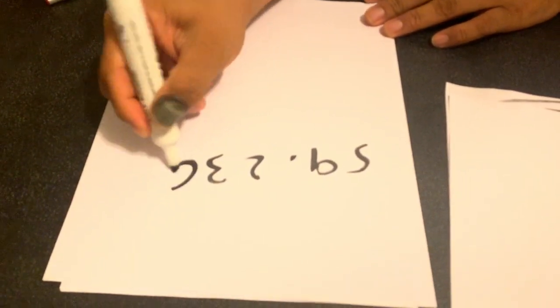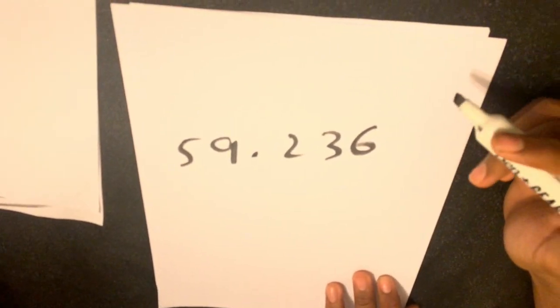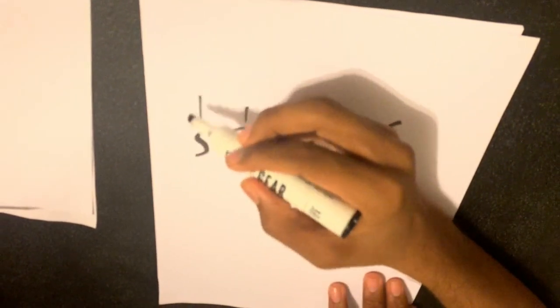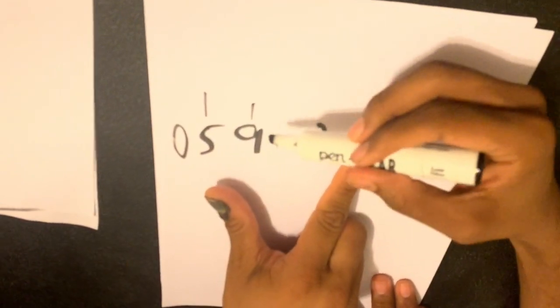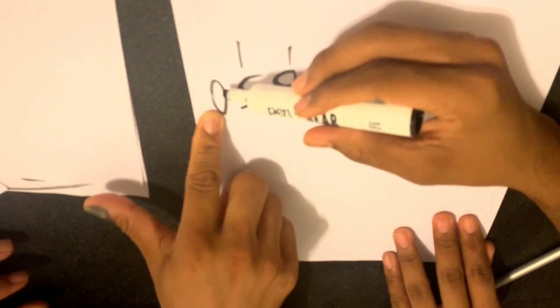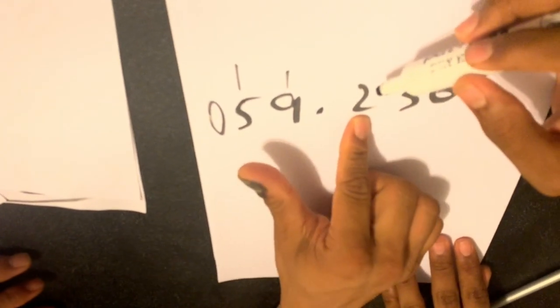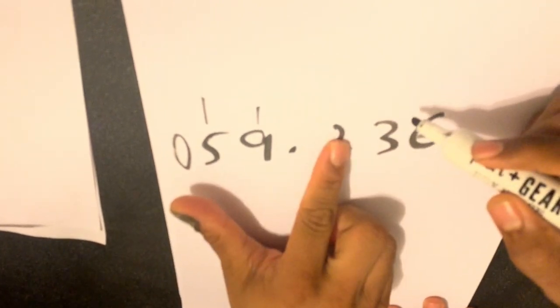Now we're going to move to decimal numbers. 59.236 — round it to the 100th. So we have to find the 100th place. This is 1, 10, and 100th. No — 100th and 100 are not the same. This is 10. This is 1. This is 10. This is 100th. So, this is the 10th, this is the 100th. I have to round to the nearest 100th.